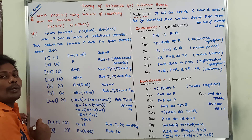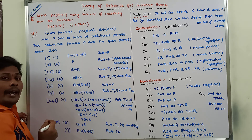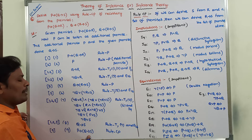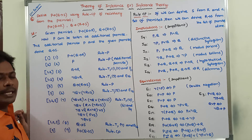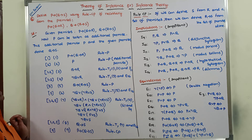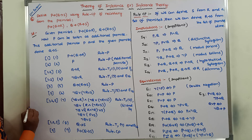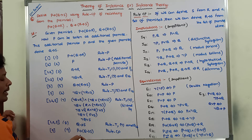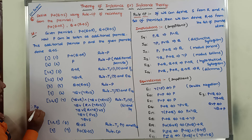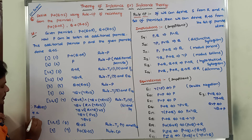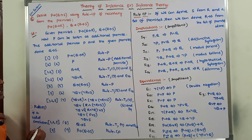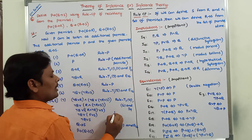We have to derive Q conditional S from the given premises and the additional premise. In the final step, we write P conditional Q conditional S. This is how we solve the given problem using Rule CP. Therefore, P conditional Q conditional S is a valid conclusion. Thank you for watching this video. If you like this video, please share it with your friends and classmates, and please subscribe to my channel.